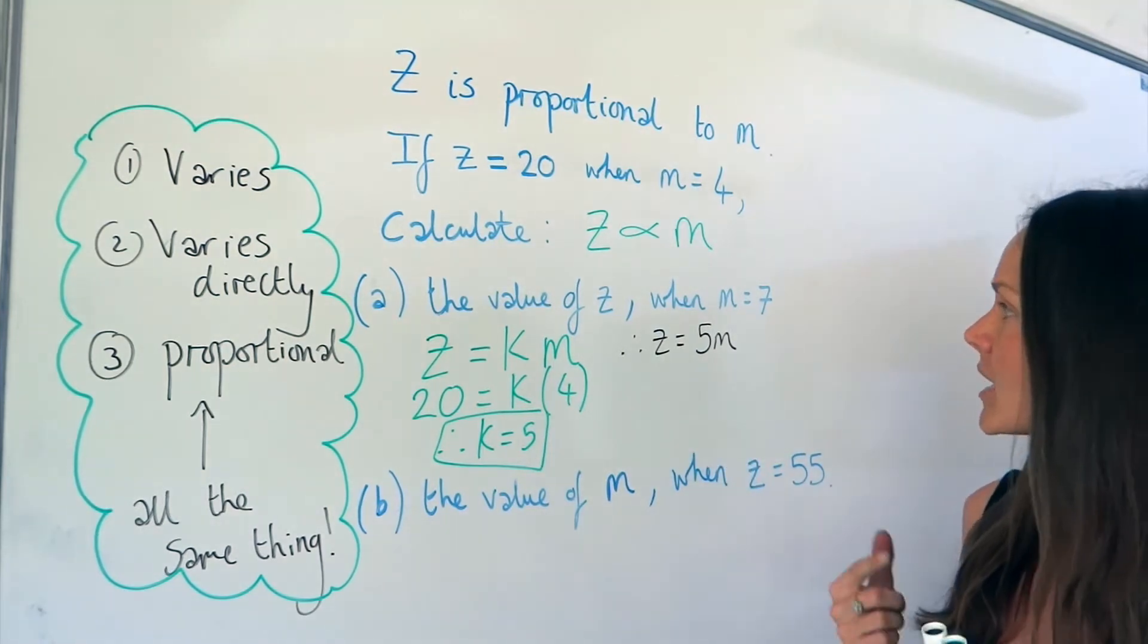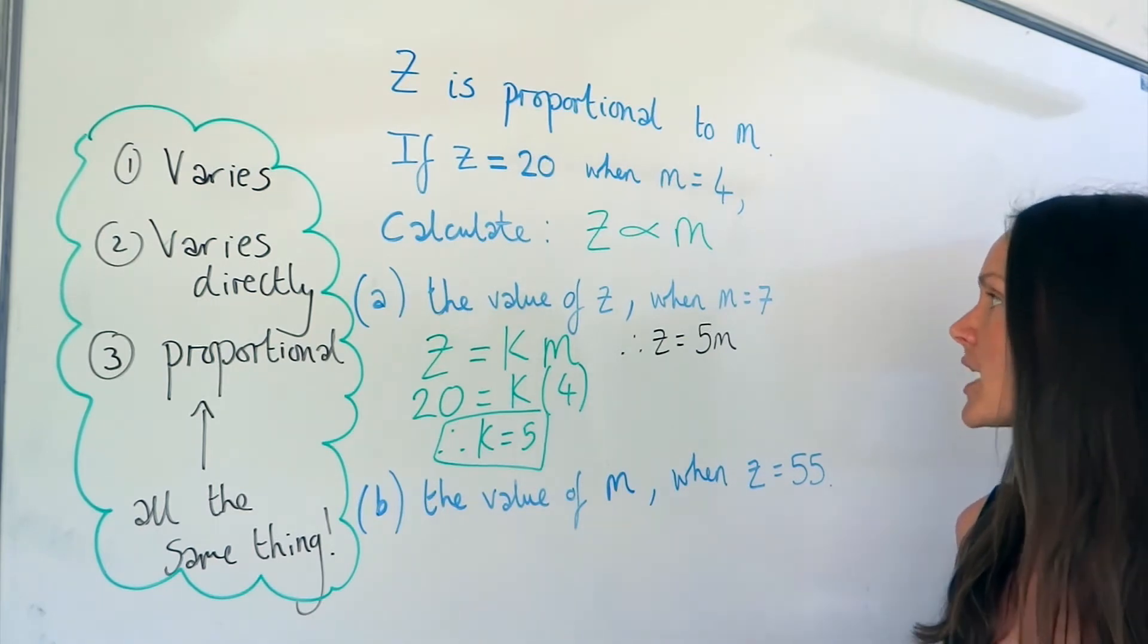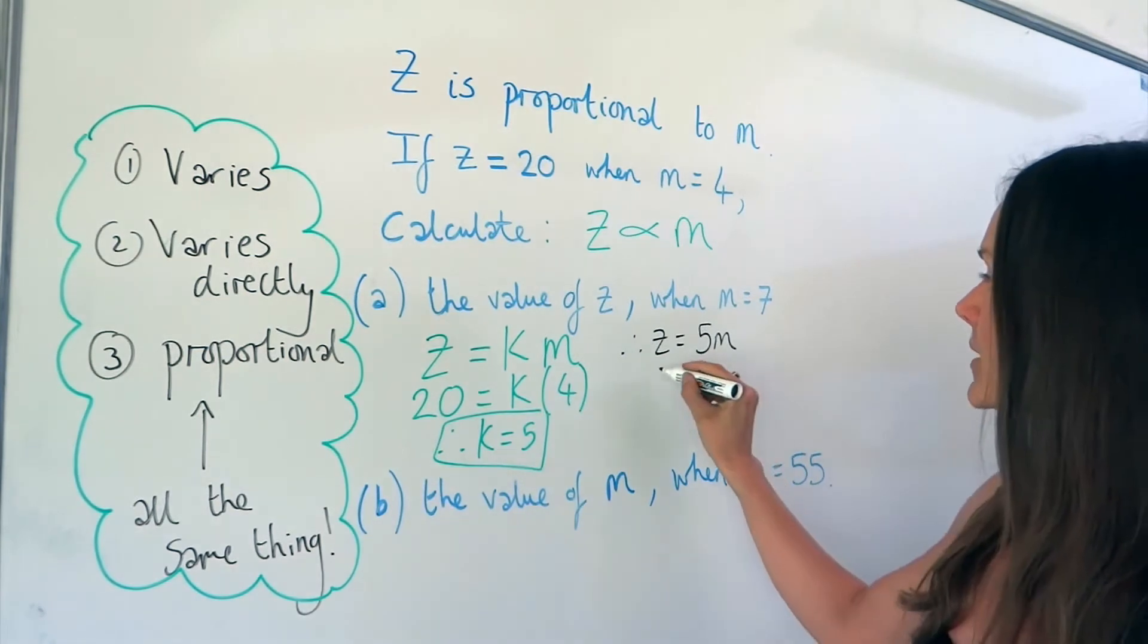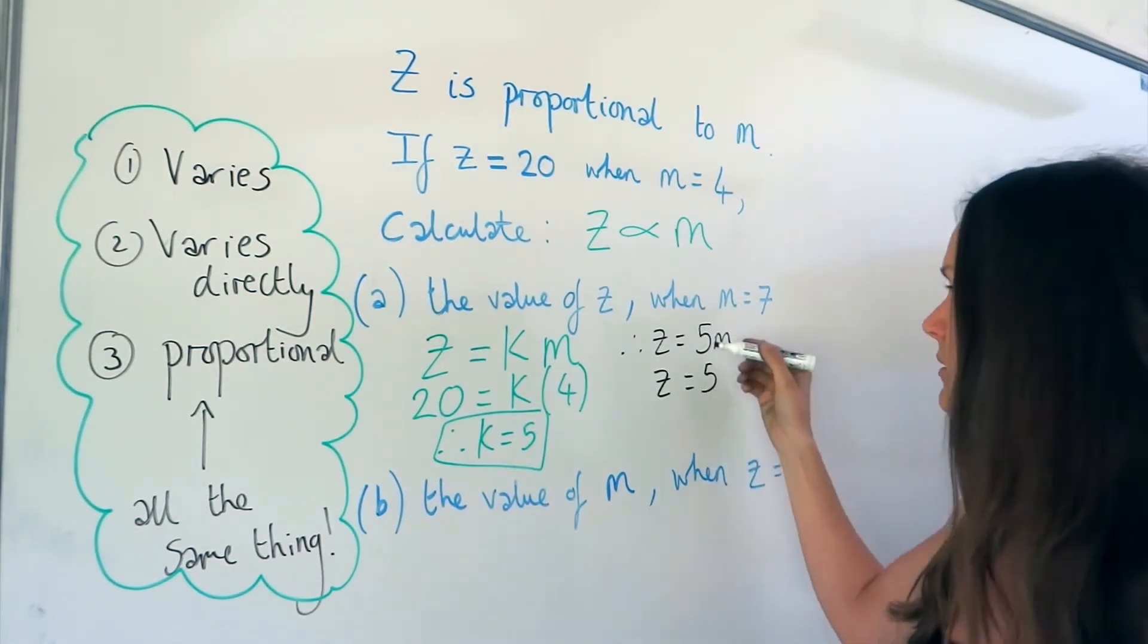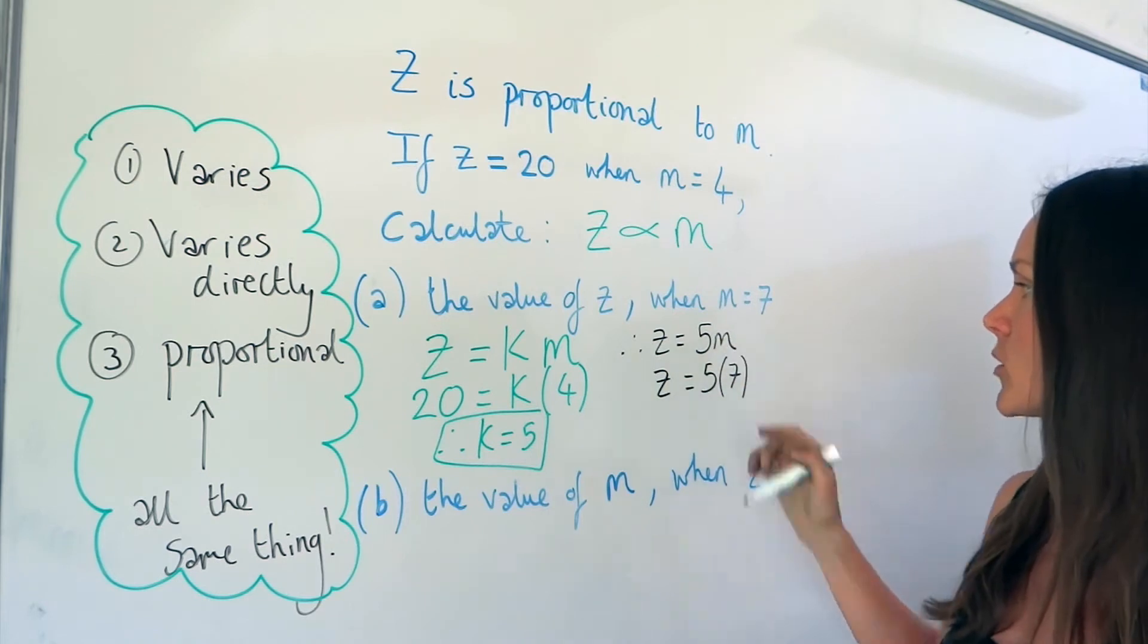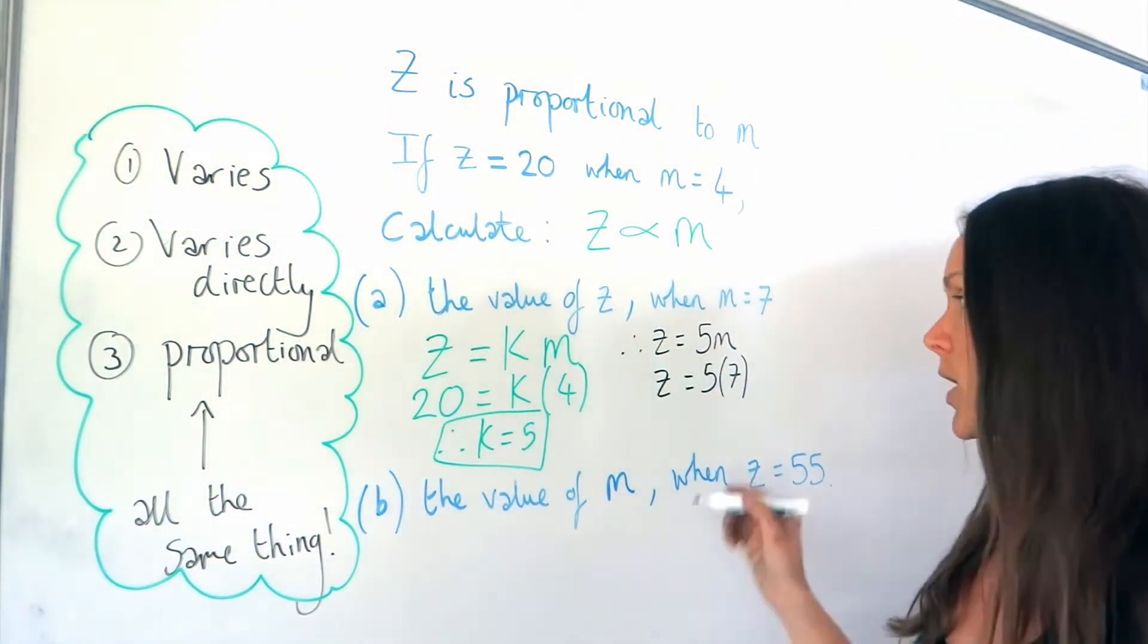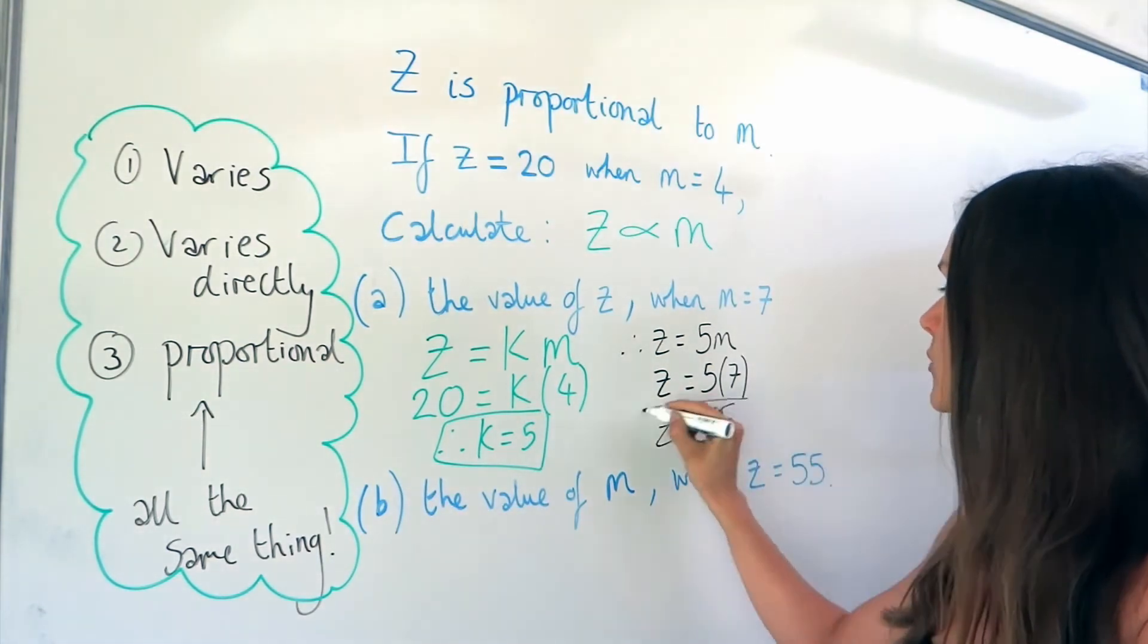So in part a, it tells us that m is 7, and we have to work out the value of z. So change your m value to 7 in the equation. So z we're trying to find, 5 is the constant, so it's always going to be the same, and m is 7. Which means z must be 35, because 5 multiplied by 7 is 35. So we've answered part a.